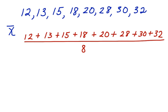Here's what that looks like. When we add up all the values in the data set, we get 168, and we divide that by the number of values in the set, which is 8, which means we have a mean of 21.